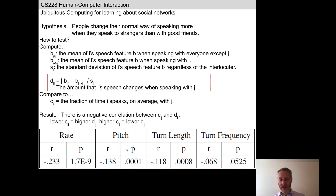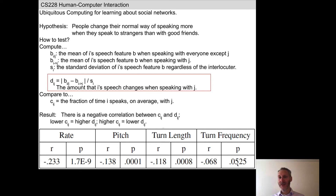The P values associated with each R represent the probability that the anti-correlation is illusory. For rate, the probability is very low — there's high probability the anti-correlation is real. Same for pitch and turn length. In the case of turn frequency, P is higher than 0.05, so we can't trust that negative correlation. The negative correlation showed up more or less in the first three prosodic features but not the fourth.